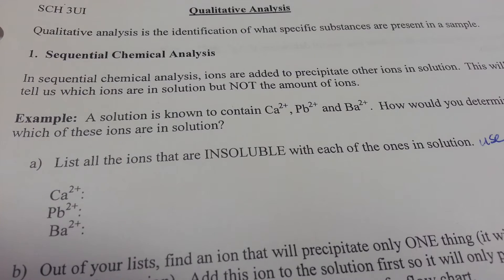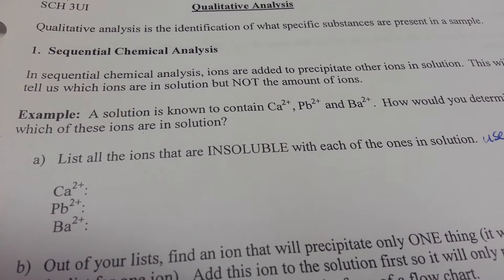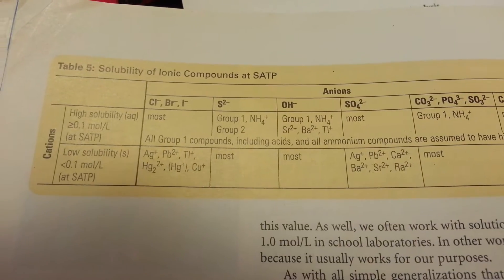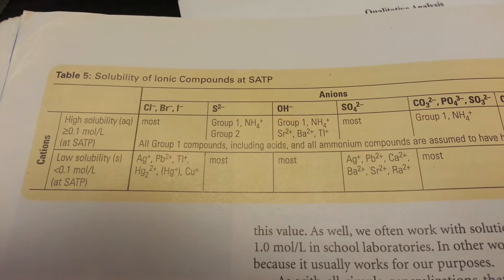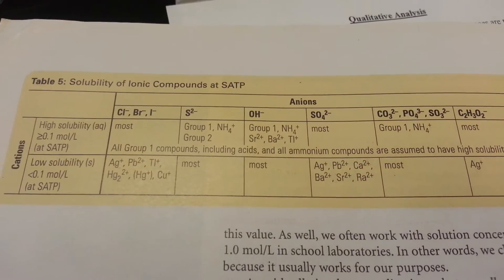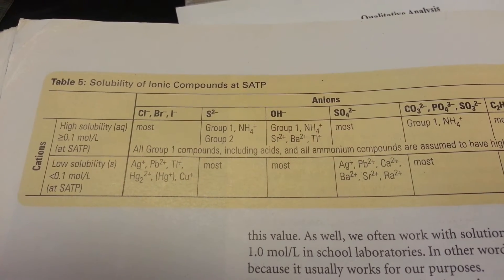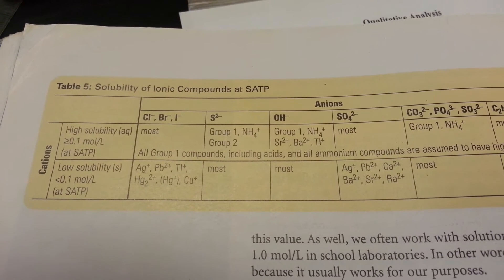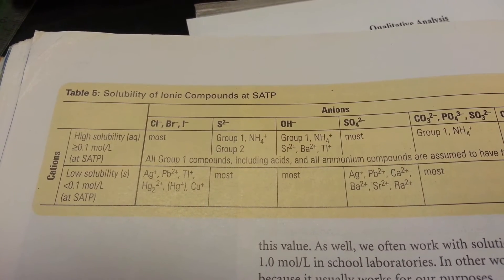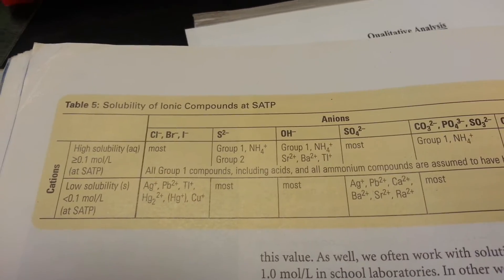Our first step is to list all the ions that are insoluble with calcium, lead, and barium. To do so, you need to use your solubility chart found on page 325 or on the back of your information sheet. First, we'll do calcium. Calcium is an alkaline earth metal that is located in column number two of the periodic table. It's considered to be a group two alkaline earth metal.